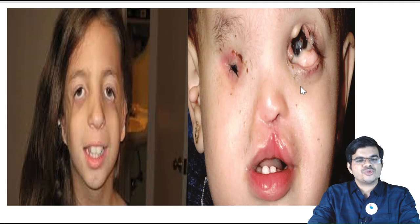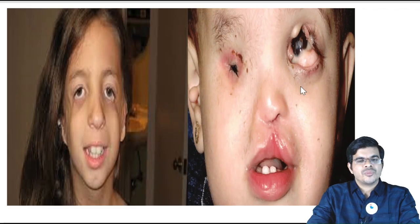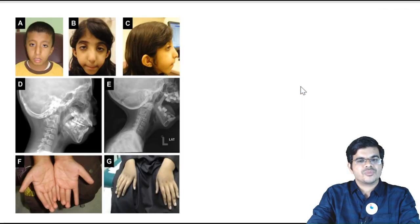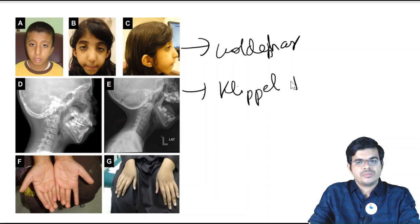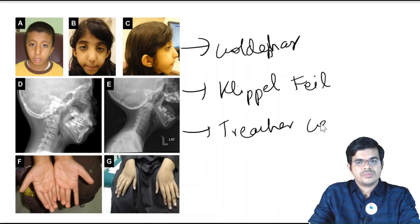Microtia is associated with syndromes like Goldenhar syndrome, Treacher Collins syndrome, and Klippel-Feil syndrome.